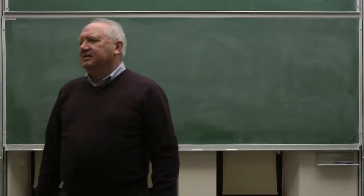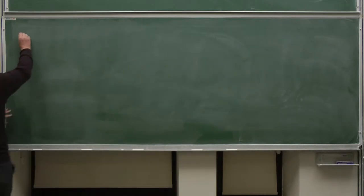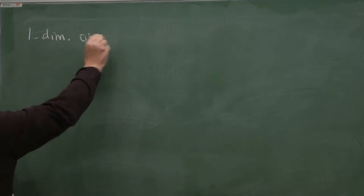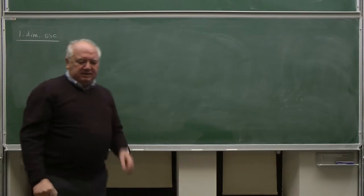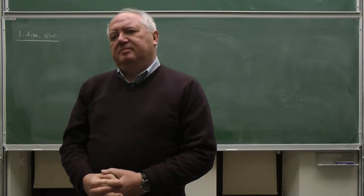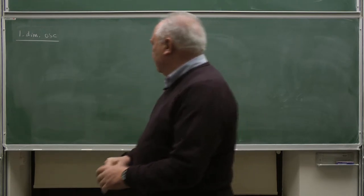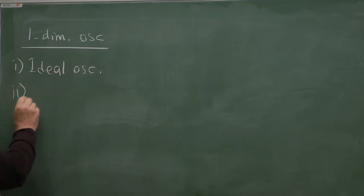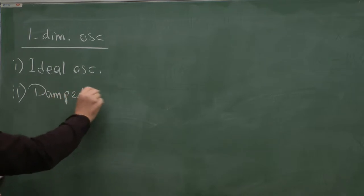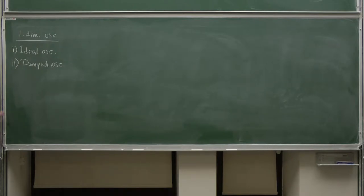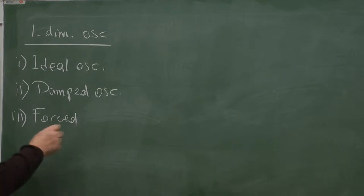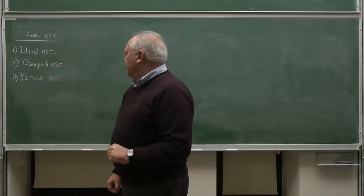We will study one-dimensional oscillations. I will solve three cases: first, the ideal oscillator with an example or two; second, the damped oscillator, where there is friction acting on the oscillating body; and third, the forced and damped oscillations. In each case I will explain a little bit of the theory and then we shall solve some problems.